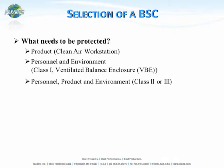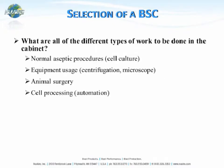The most common requirement is personnel, product, and environmental protection, which is offered in both the Class II or Class III biological safety cabinet. The next question is: what are all the different types of work to be done in the cabinet? Are you doing normal cell culturing procedures? Are you using equipment inside the unit, like a centrifuge or microscope? Are you doing animal surgery requiring a larger access opening for mouse cages? Or are you using cell processing automation that might need a larger custom biological safety cabinet?